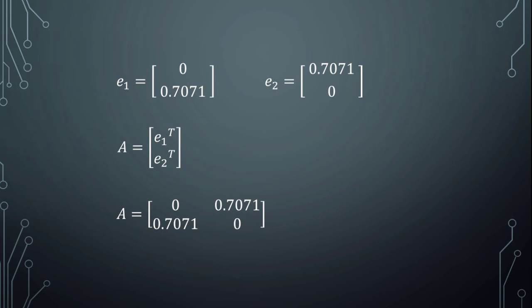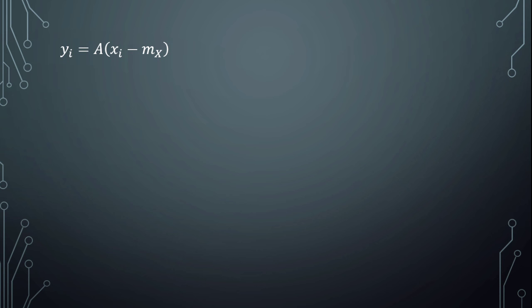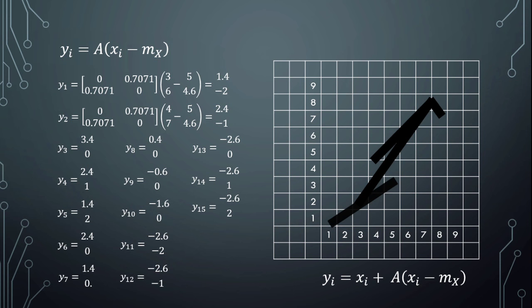Now we apply the transformation matrix on every value of x using the formula: yi equals A times (xi minus mx). For example, for y1, we compute A times (x1 minus mx) and get the result (1.4, -2). Computing this for every pixel and plotting the results, we can see that our arrow is transformed using the transformation matrix.